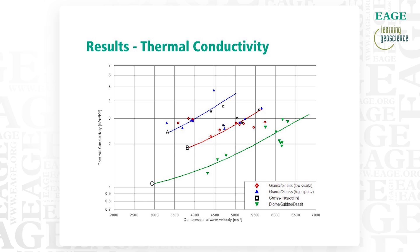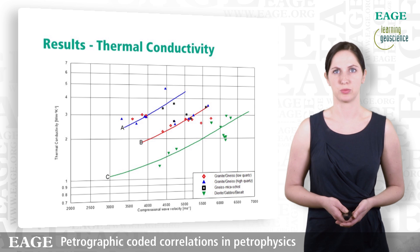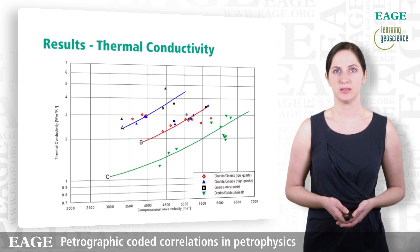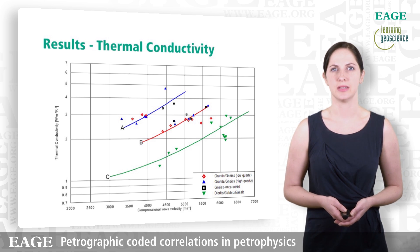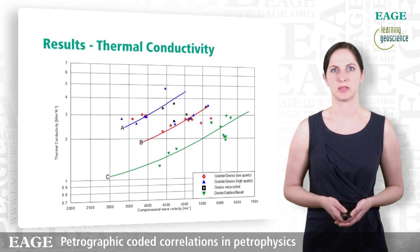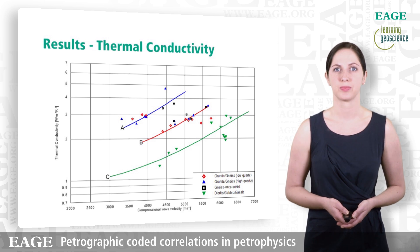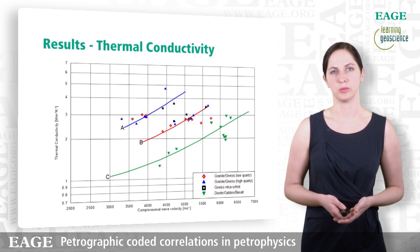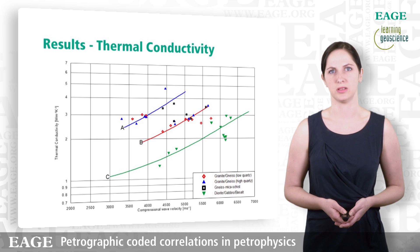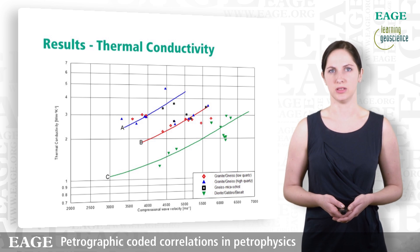On this slide you see the results from the correlation of thermal conductivity and compressional wave velocity for magmatic and metamorphic rock types. Dots are measured data; the lines show the calculated correlation lines for the singular rock types of the two inclusion models. The green one is for diorite, gabbro and basalt; the red one is for granite and gneiss with lower quartz content; and the blue one is for granite and gneiss with higher quartz content. We had to divide those because of the high thermal conductivity of quartz and therefore its high influence on the total thermal conductivity of the rock.